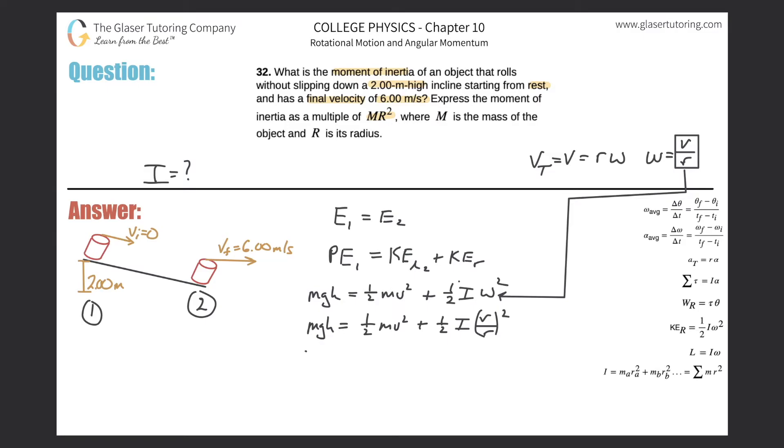Now this is algebra, not physics. I notice there's a common m between these two terms. I need to solve for I and get my answer to have mr² in it. My final equation should look like I equals some number multiplied by mr². These two items have mass in common, so subtracting and rearranging gives mgh minus one-half mv² equals one-half I v² over r².